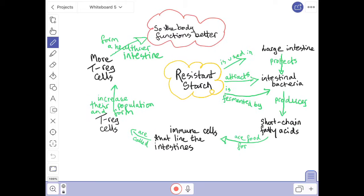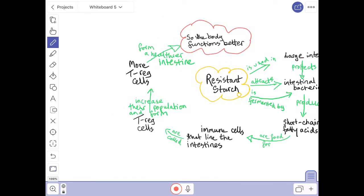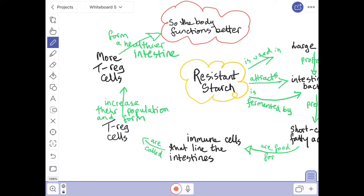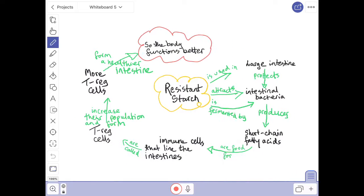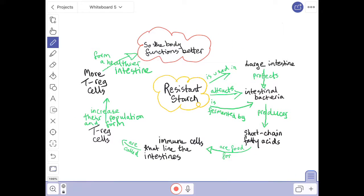Now these short chain fatty acids are food for our immune cells that line the intestines and these immune cells are called T-reg cells. They increase their population when they're fed the short chain fatty acids and they produce more T-reg cells. So this forms a healthier intestine, so the end point is that the body functions better as the authors say.